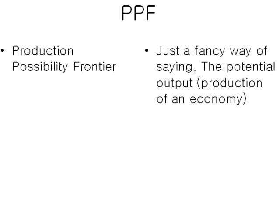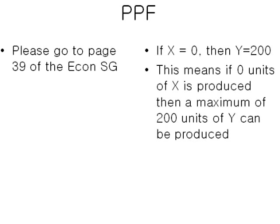Okay, PPF. This drove me crazy on how they got the formula, the algebraic expression, in the study guide on Chapter 2. So let's look at this. PPF — Production Possibility Frontier — it's just a fancy way of saying the potential output or production of an economy. So let's go to page 39 of this Economic Study Guide.